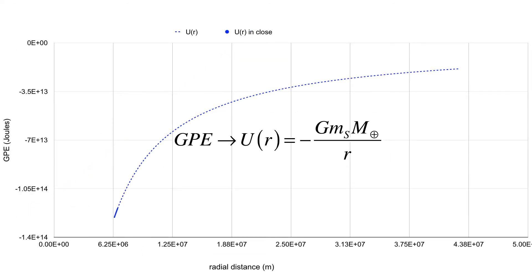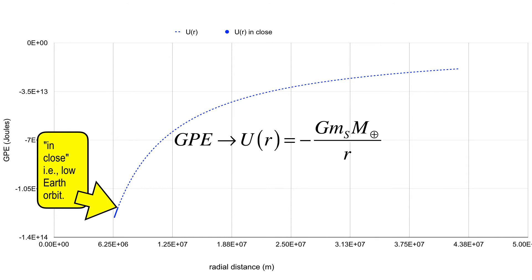Here's the curve. I've graphed a much larger range of altitude now. Down close, the small solid blue line segment represents sea level out to 400 kilometers — the picture we just did. The horizontal scale is now in meters, so 6.25 million meters is 6,250 kilometers. The curve starts just above where the surface of the earth is. The sea-level-to-400-km segment we had on the previous slide is this little blue line segment in close.